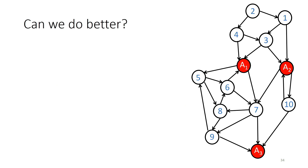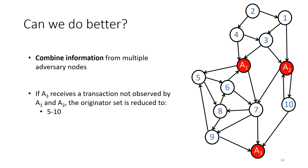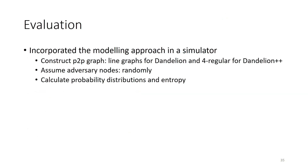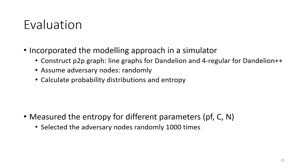Here again, we can do better by combining information from multiple adversaries. If adversary A3 receives a transaction, the transaction must have been generated by one among nodes 5 to 10, because if it was from nodes 1 to 4, it would first have been captured by A1 and A2. If those adversaries collude, they can easily identify the originator. We implemented all this in a simulator, constructing peer-to-peer graphs, line graphs, and four-regular graphs with assumed adversary nodes, then calculated probability distributions and measured entropy while varying parameters like forwarding probability, adversary fraction, and network size.